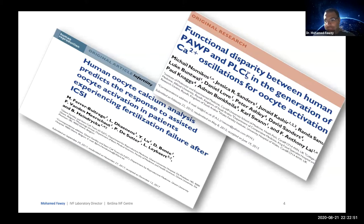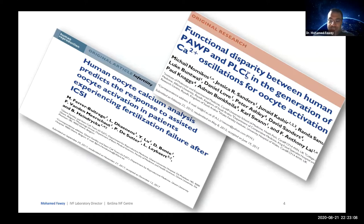Before fertilization, mammalian oocytes remain arrested at metaphase II. This meiotic arrest is released through a series of events termed oocyte activation, including cortical granule exocytosis, second polar body emission, pronuclear formation, and subsequent division.